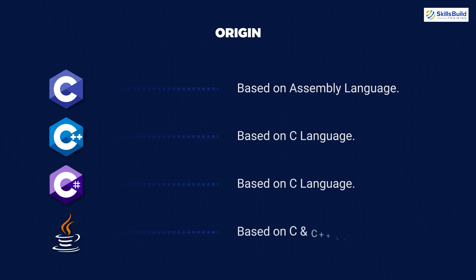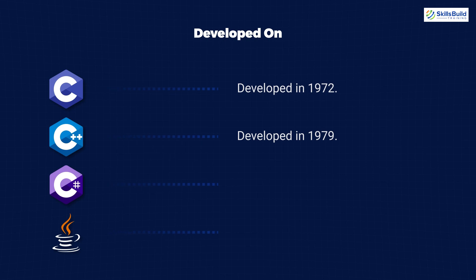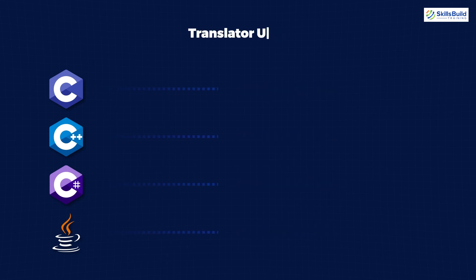Java is based on both C and C++. In terms of the time of their development: C was developed in 1972, C++ in 1979, Java in 1991, and C# in 2000 — so C# is the youngest of them all.